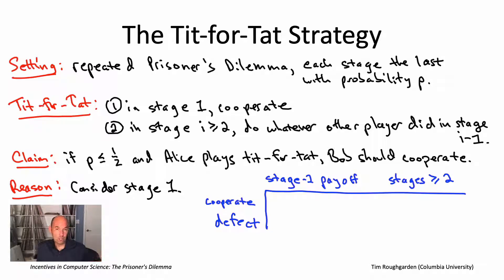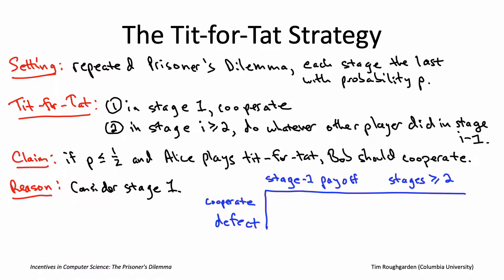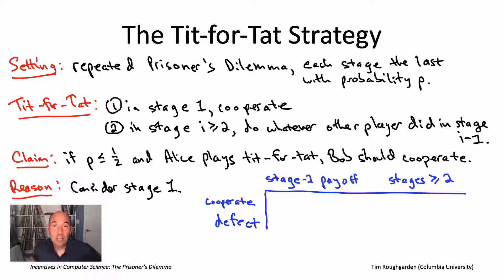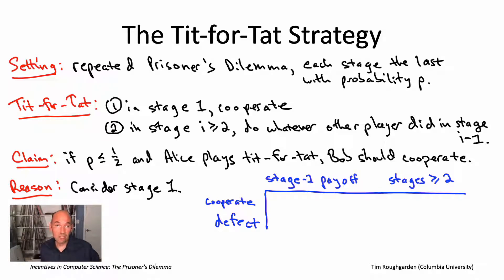What if we defected right now — what's the payoff at stage one, and what would we expect in stages two onward? As we do this cost-benefit analysis, we want to keep the original payoff matrix in mind from the file transfer game. Let me put that payoff matrix in the upper left corner of this slide to remind you of it.